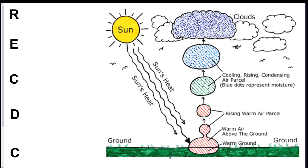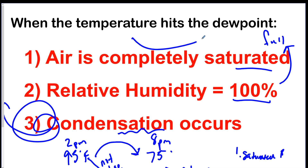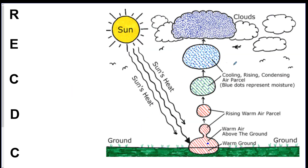For cloud formation we use the acronym RECDC: warm air on the ground Rises, Expands, Cools to the Dew point, and Condenses. As air rises the temperature drops; when it hits the dew point, condensation takes the invisible water vapor and condenses it onto tiny dust particles called condensation nuclei. Eventually enough water lands on the droplet and, with many droplets, it becomes too heavy and falls. Precipitation processes also clean the atmosphere of dust particles by bringing them down to the ground.